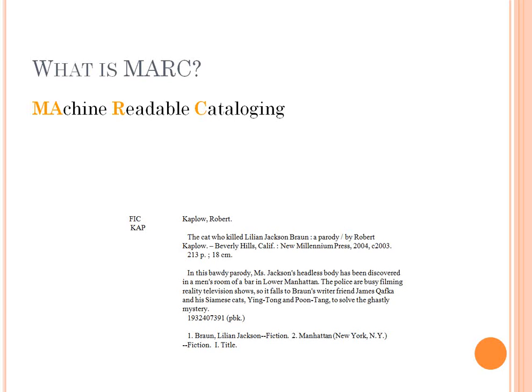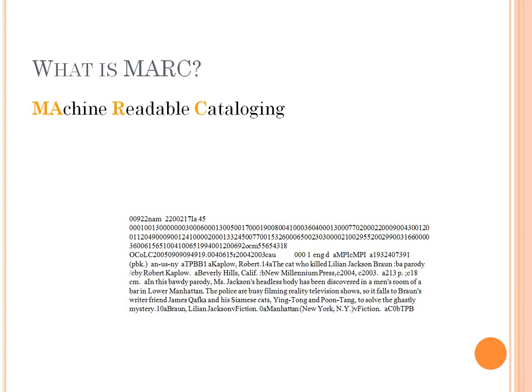Just as a quick introduction, I want to briefly cover what MARC format is. MARC stands for Machine Readable Cataloging, and basically what that means is that it makes bibliographic information available so that computers can read it. For example, here is bibliographic record information about a book, and here is how it appears in raw MARC format. This is what the computer understands.